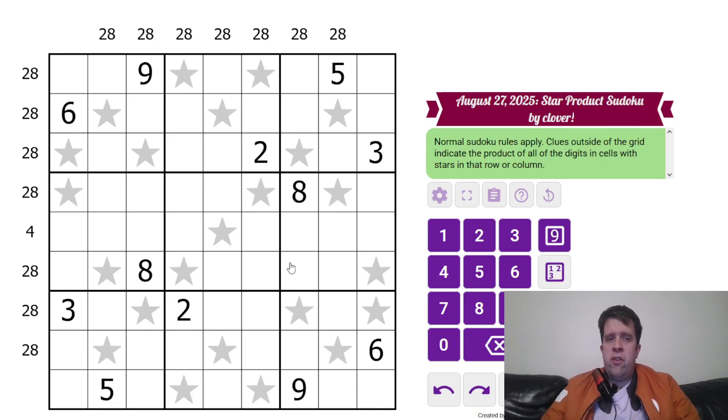So this is Star Products Sudoku. Now, normal Sudoku rules apply. That means each box, each row, each column must contain one to nine once each.